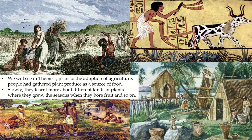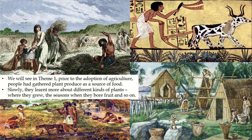In this module we'll be looking at how early man adopted agriculture. Prior to the adoption of agriculture, people had gathered plant produce as a source of food. So the main source of food for the early man was plant produce, and slowly they learned more about the different kinds of plants.